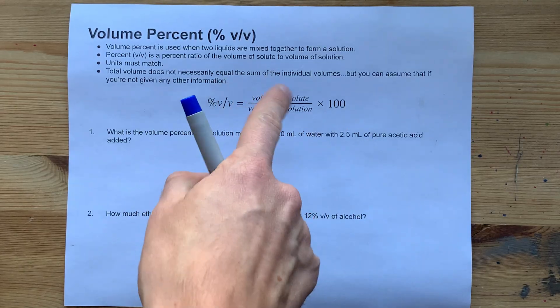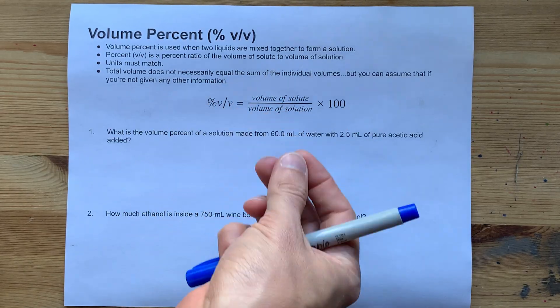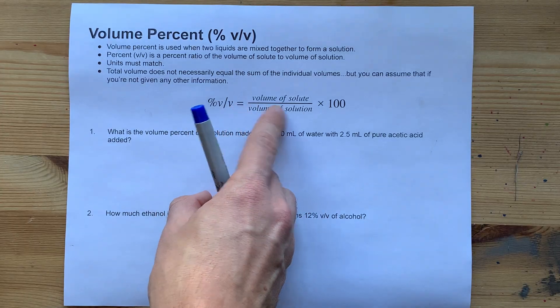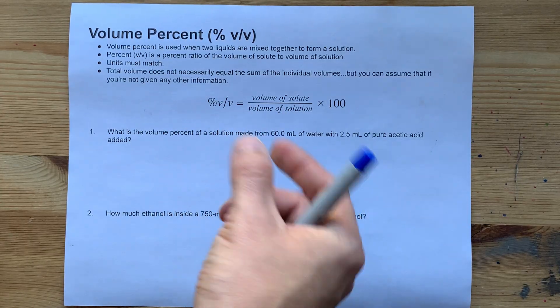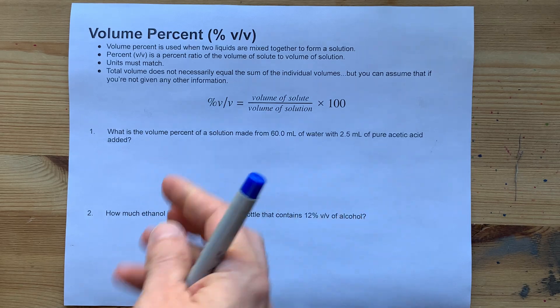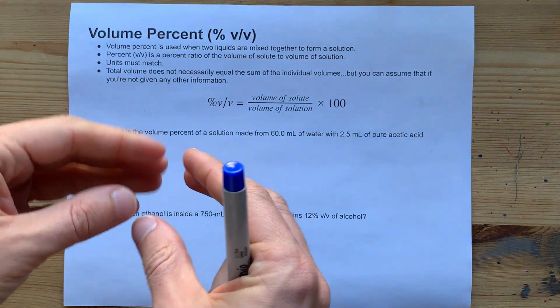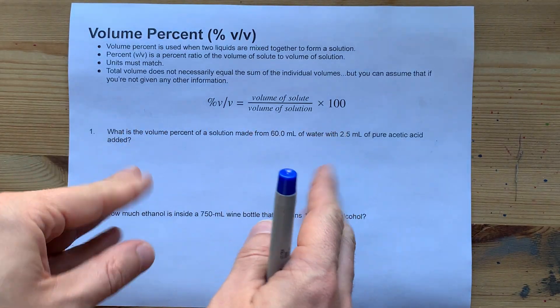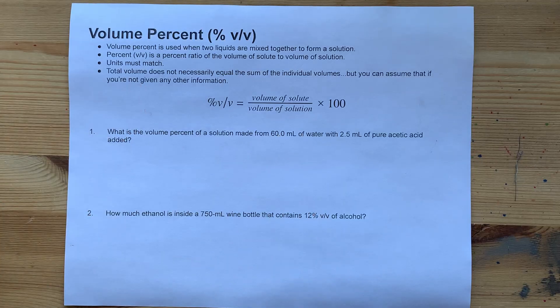Now, when you combine two liquids, you can't always assume that the total volume, the volume of the solution is the sum of the solute plus the solvent together. Because of the way the molecules stack together, you might get a small difference. But if the question doesn't give you any information about that, you can assume that they do add.